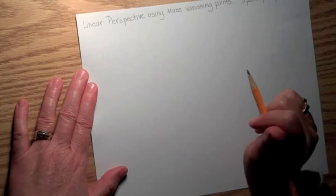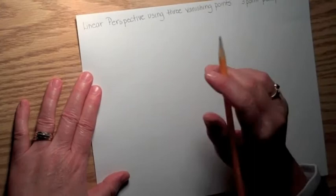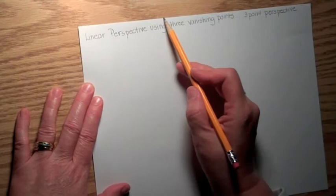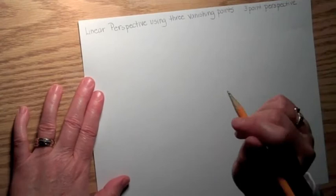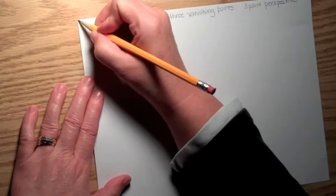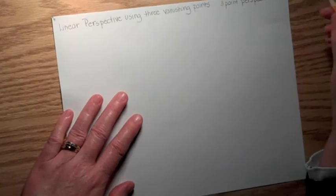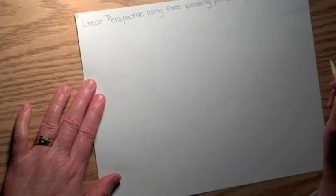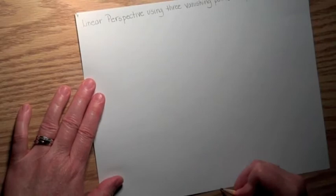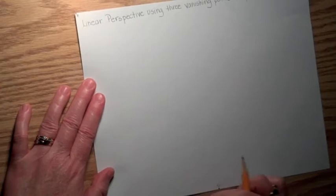Your horizon line for this particular drawing, we're not even going to draw it. Our horizon line today is actually going to be the line that goes right across the top of our paper. Your vanishing points A and B have to be on that line. So I'm going to put vanishing point A in this corner and vanishing point B over in this corner, because A and B always have to be on the horizon line. Vanishing point C is your depth point, so I'm going to put vanishing point C way down here at the bottom of the paper, in the middle, against the bottom edge.